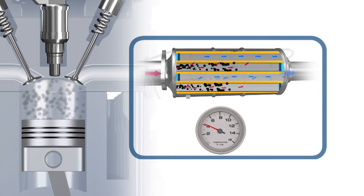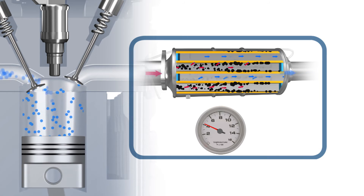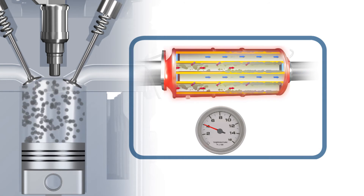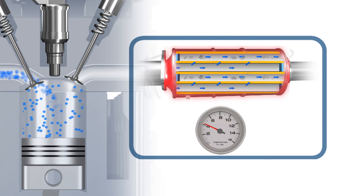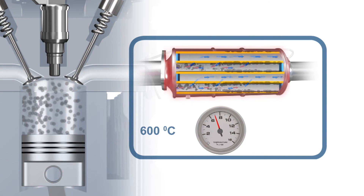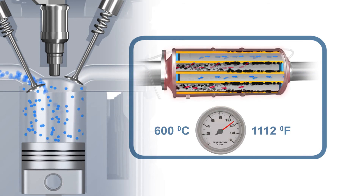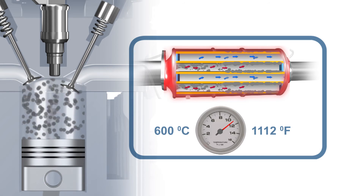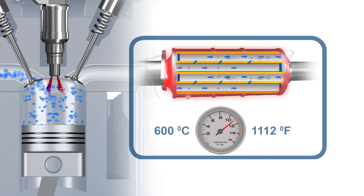During regeneration, additional fuel is injected via multiple post-injections in order to increase the exhaust gas temperature. During this period, the DPF temperature is raised to approximately 600 degrees Celsius, or 1100 degrees Fahrenheit, and the accumulated soot is oxidised or burned off as CO2.